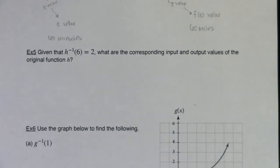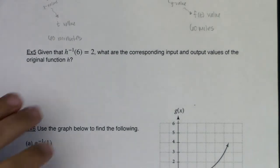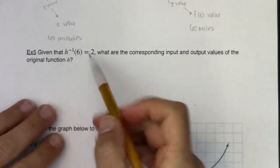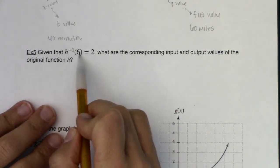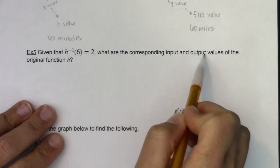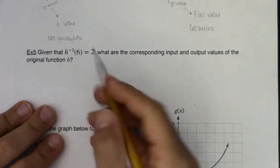All right, so for example 5, we've got another numerical example. I've got no function to plug into, I've got no graphs, just some numbers. So given that h inverse of 6 is equal to 2, what are the corresponding input and output values of the original function h?